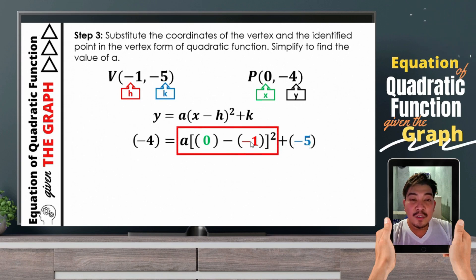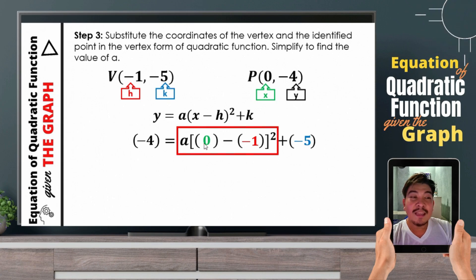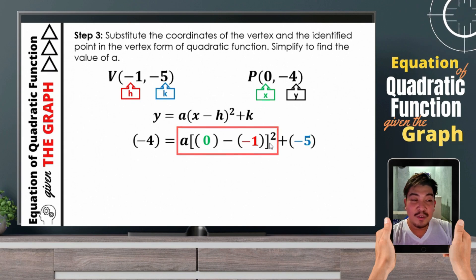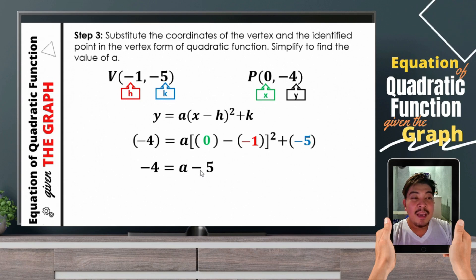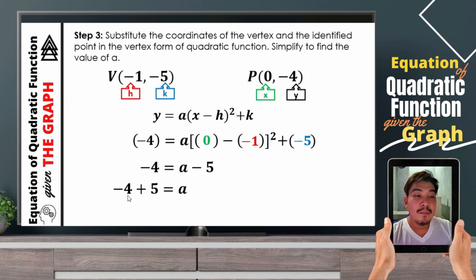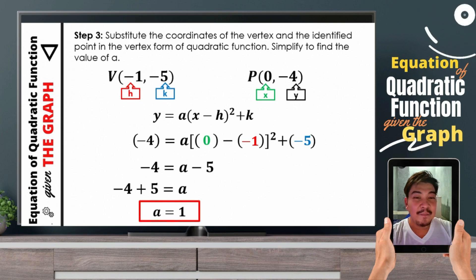Let us fill in the blanks. y here is negative 4, x is 0, h is negative 1, and k is negative 5. Then we simplify first what is inside the grouping symbol. 0 minus negative 1 will be positive 1. 1 squared will be 1. 1 times a will be 1a. Then positive times negative 5 will become negative 5. Therefore, the resulting equation will be negative 4 is equal to a minus 5. By transposing negative 5, we obtain negative 4 plus 5 is equal to a. Therefore, the value of a is equal to 1.